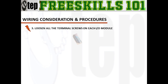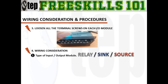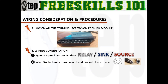Third, loosen all terminal screws for both the input and output modules. Fourth, wiring considerations. Under wiring consideration: first, you need to consider what type of PLC input and output module, to identify its polarity. Second, check also the wire gauge size so you would know its maximum capacity, and also to avoid loose thread at the PLC termination.